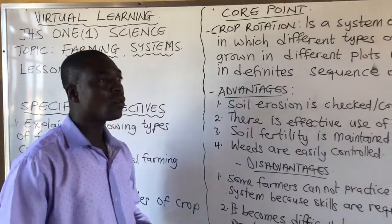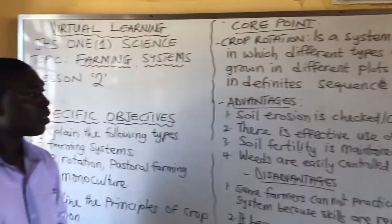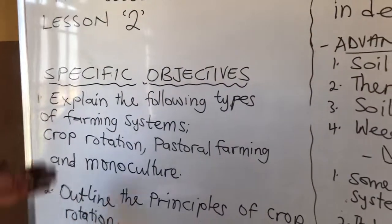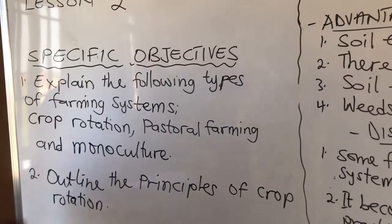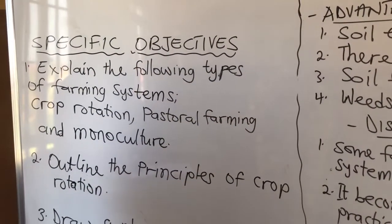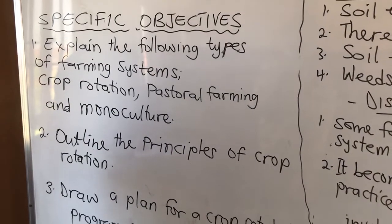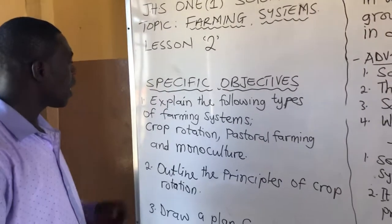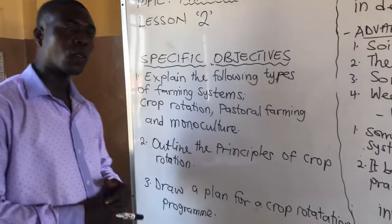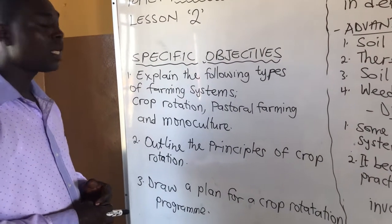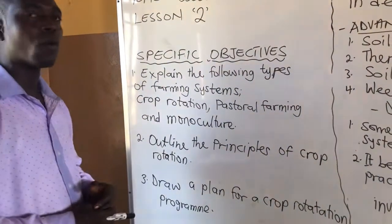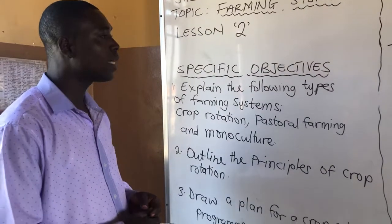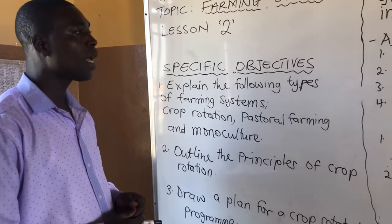By the end of the lesson we should be able to explain the following types of farming systems: crop rotation, pastoral farming, and monoculture. We are continuing from our previous lessons where we talked about some of the farming systems. Today we are continuing with the rest of the systems. You should also be able to outline the principles of crop rotation, and finally you should be able to draw a plan for a crop rotation program. This is what we are expecting to achieve at the end of today's lesson, so I urge you to pay attention.